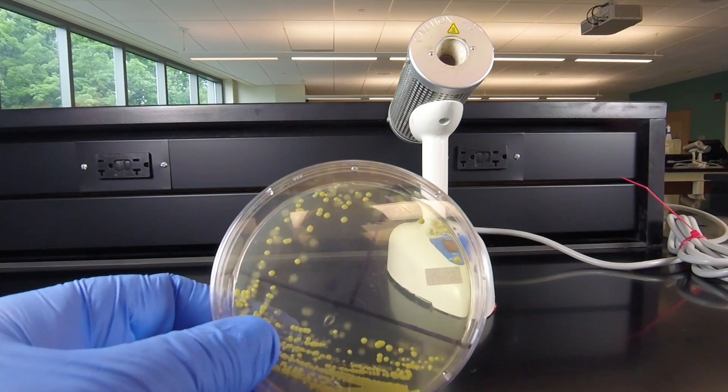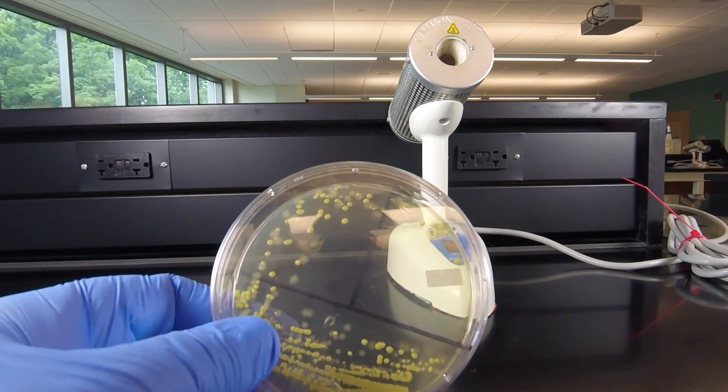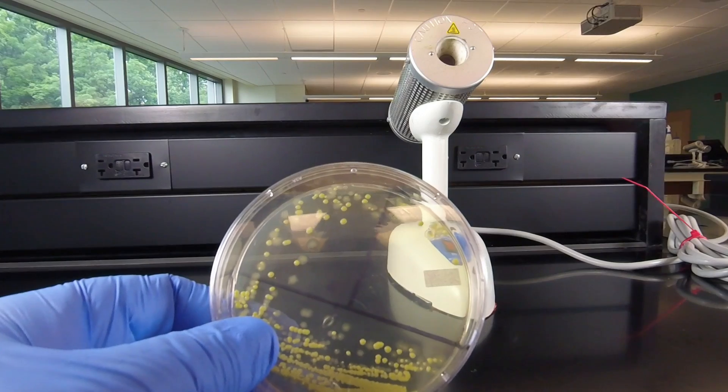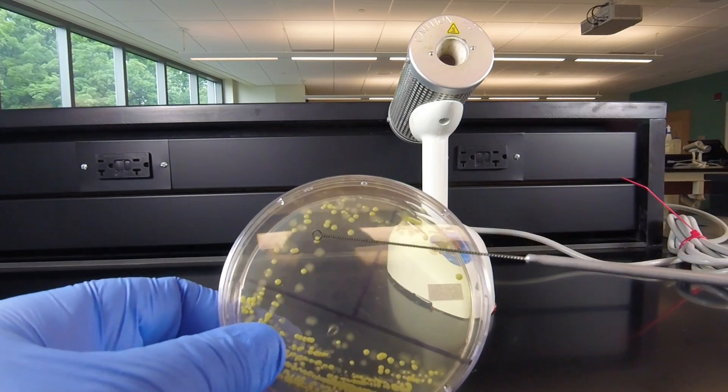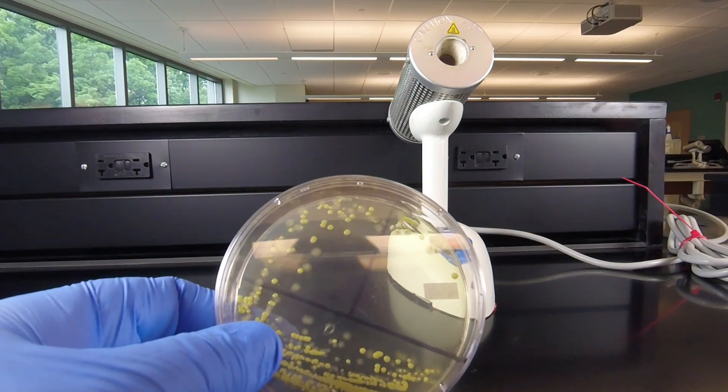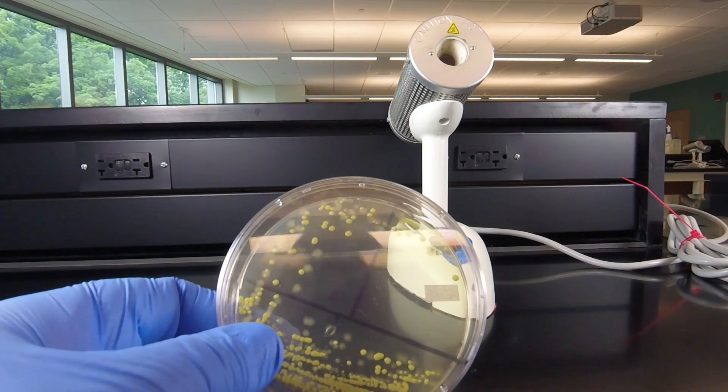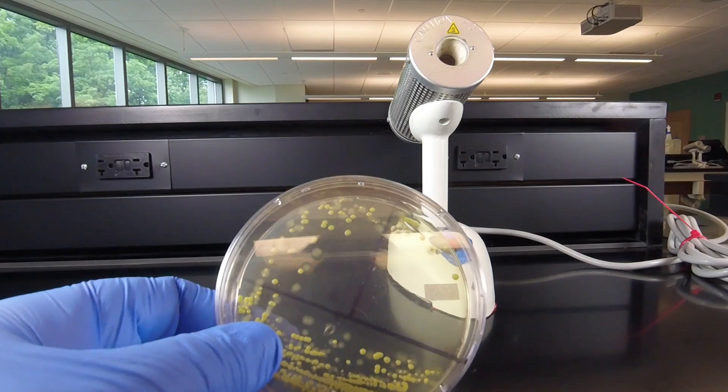So we don't currently have a pure culture here. We have two bacteria growing on the plate. But if we were to pick off a single colony of either the Micrococcus luteus or the E. coli and streak that on a new petri plate, then we would have a pure culture.